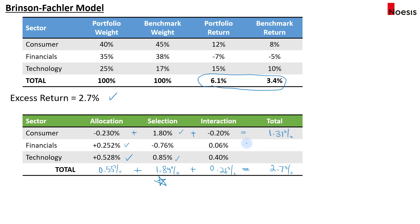If we total the effects for each sector, the consumer sector contributed 1.37%, financials contributed negative 0.448%, and technology contributed 1.778%, summing to 2.7%. Technology contributed the most to the excess return, followed by consumer. Financials did not contribute — instead, it destroyed some of the excess return.